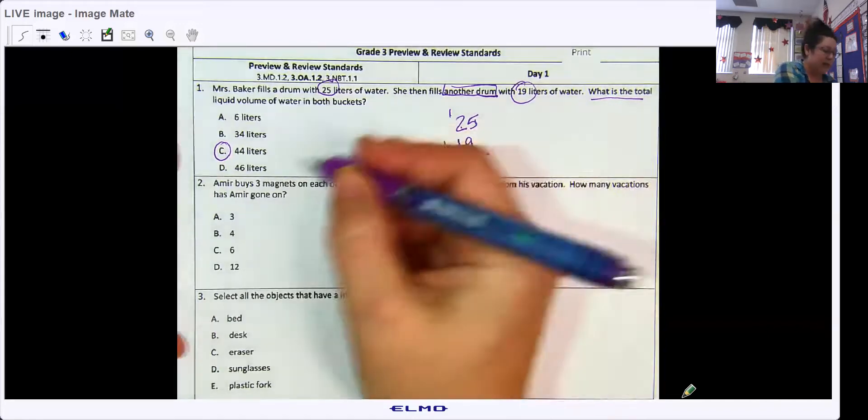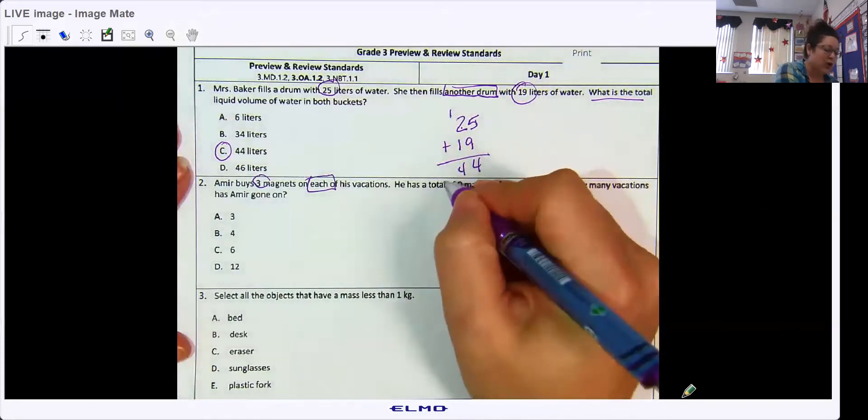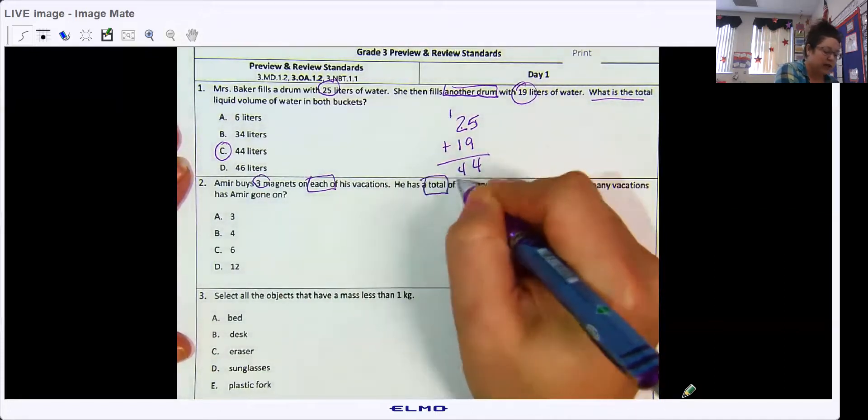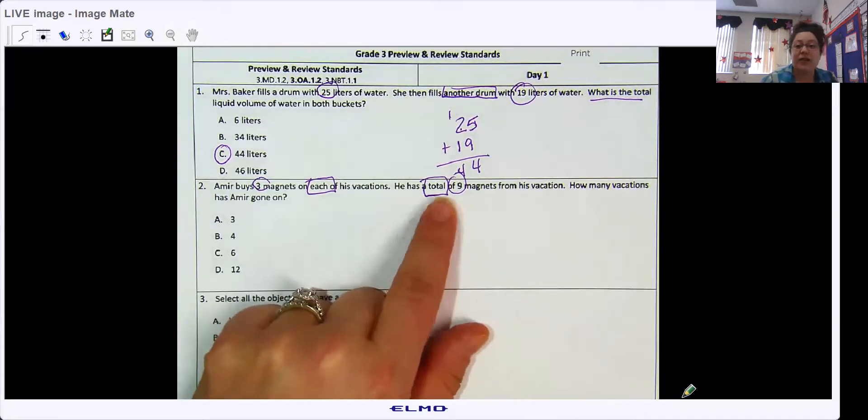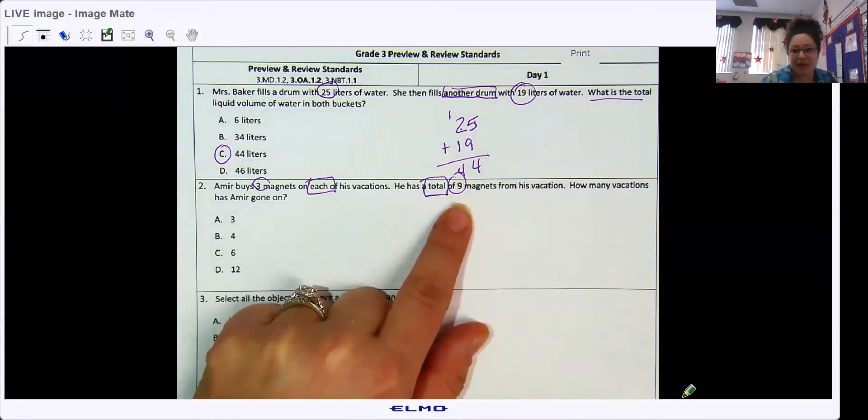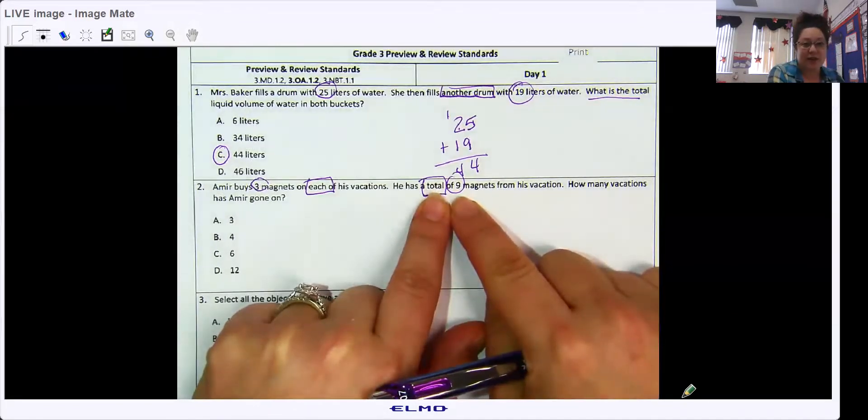Amir buys three magnets on each of his vacations. He has a total of nine magnets. How many vacations has he gone on? What are we going to do? Are we going to multiply, add, subtract, or divide? He has a total of nine, so we can't get any bigger than nine because that's the total. So that right away says no adding and no multiplying because when you add and multiply, your answer gets bigger. We already have our altogether number.